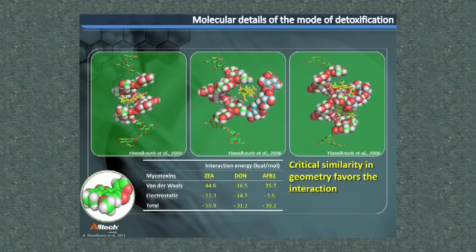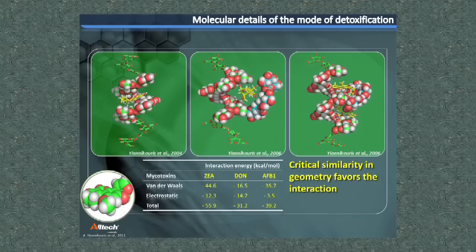Those models were constructed using analytical techniques that measured the three-dimensional organization of each molecule and also to generate and apprehend the chemical interaction between those different components. Different tools were used to do this type of evaluation — X-ray diffraction, for example, or NMR to evaluate the stability equilibrium between those different compounds. We characterized chemical linkages such as hydrogen bonds and van der Waals forces that existed between beta-glucans and the different chemical groups contained in mycotoxins.